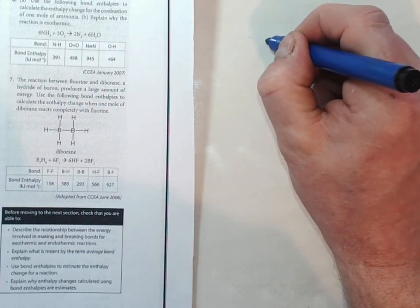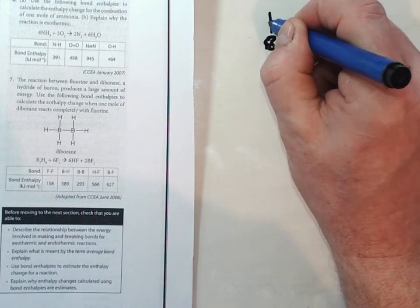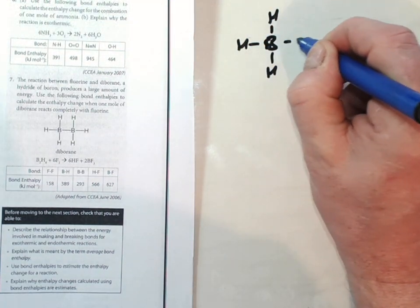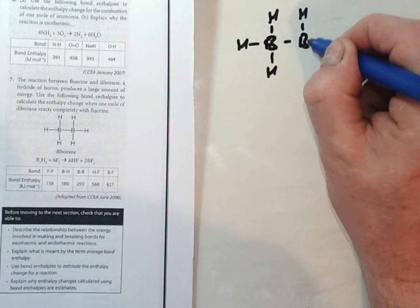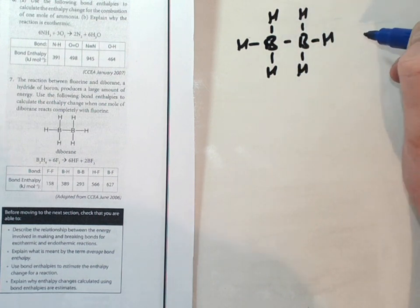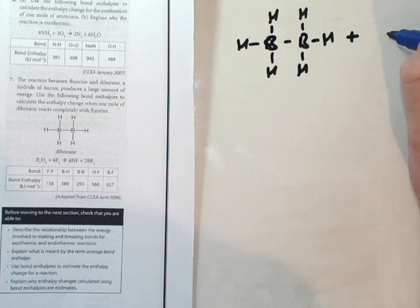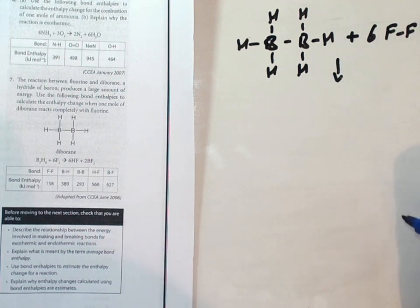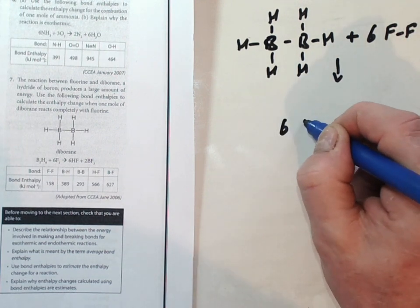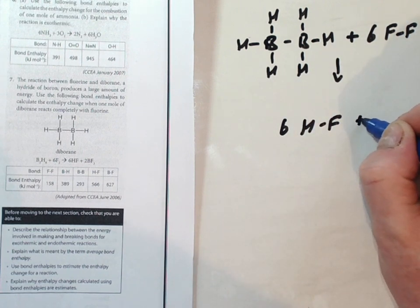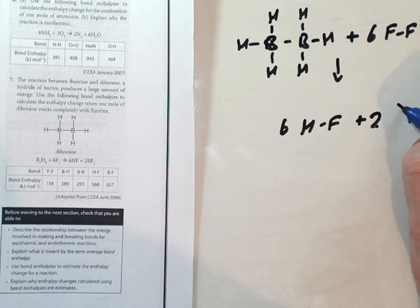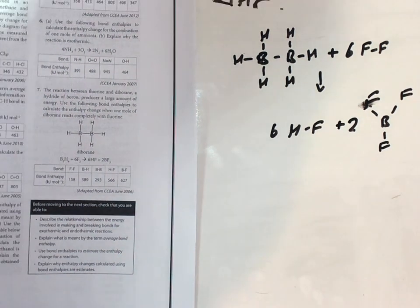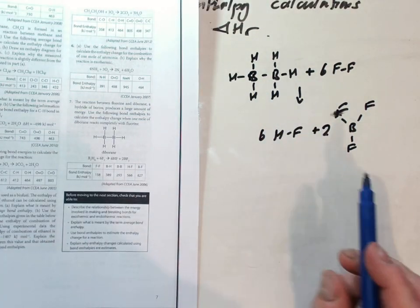I'll try and do my calculations so we can see the question and my calculations at the same time. The only difference between this and the last one is you have to work out the bonds you're breaking in most of the reactants and products, which you didn't have to do in the last one. We have six B-H bonds and six F-F covalent bonds. So we have six H-F there and we have two BF3.